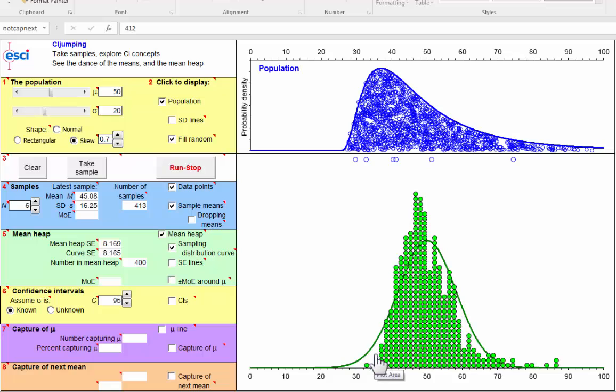And the central limit theorem tells us that even if out in the world the populations we're dealing with are not normal, then most likely the sampling distribution that we're really interested in will be at least approximately normal. So that is very reassuring for using the statistical model that we usually rely on.